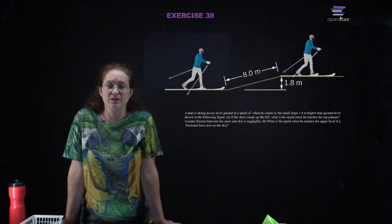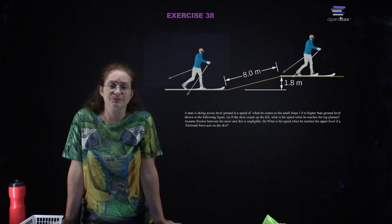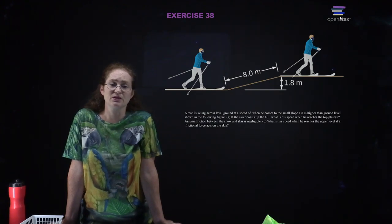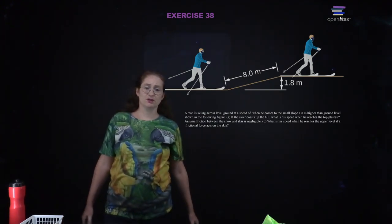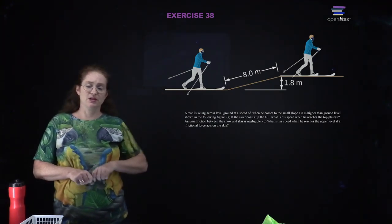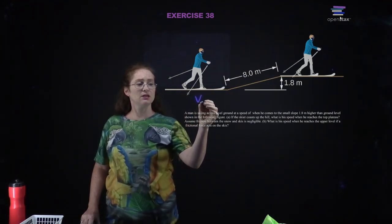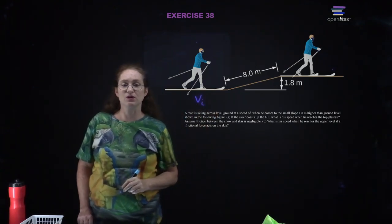A man is skiing across level ground at a certain speed and comes up to a small slope. If he coasts up the hill, what is his speed when he reaches the top of the plateau? Assume friction between the snow and skis is negligible. We'll leave his initial speed as v_initial. Whenever you're doing potential energy problems involving gravity, you have to choose where you put your zero — we'll put it at the ground at the bottom of the hill.